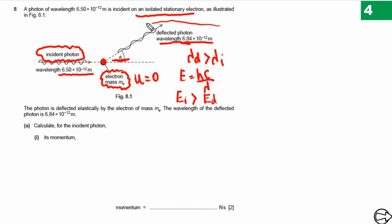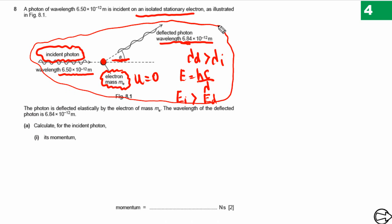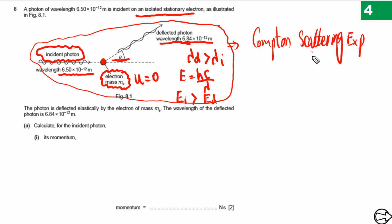Looking at this overall setup, we can understand it as two particles colliding with each other — one particle gaining kinetic energy and one losing energy. This whole setup is called the Compton Scattering Experiment, which showed that light behaves as a particle.